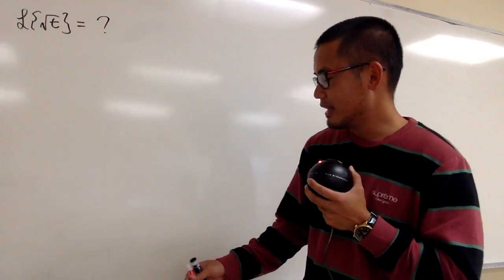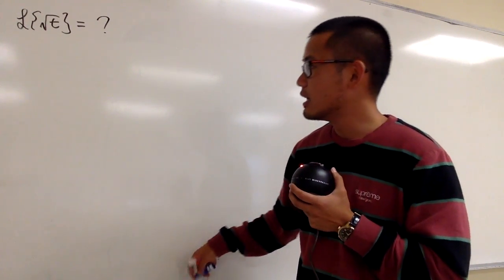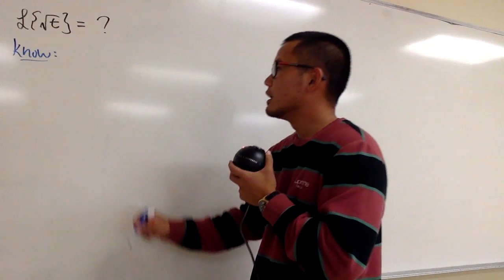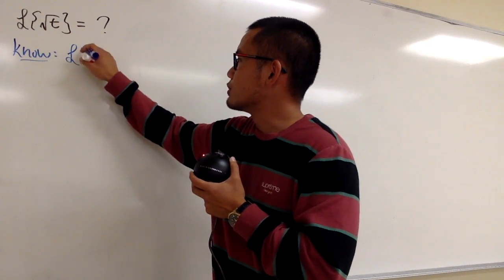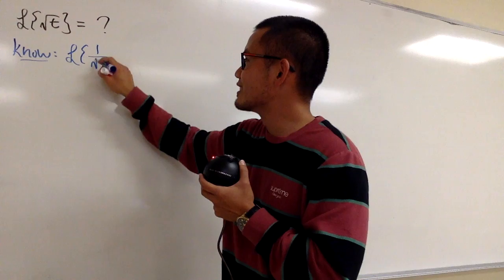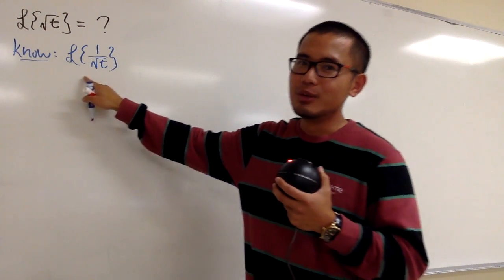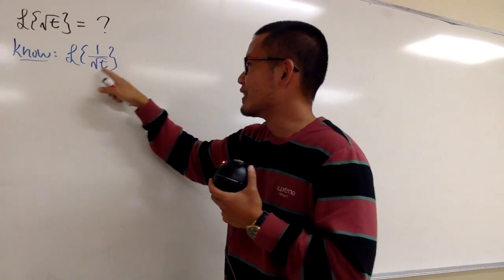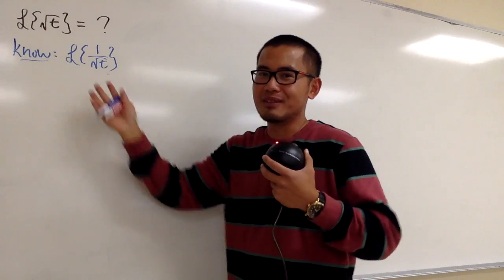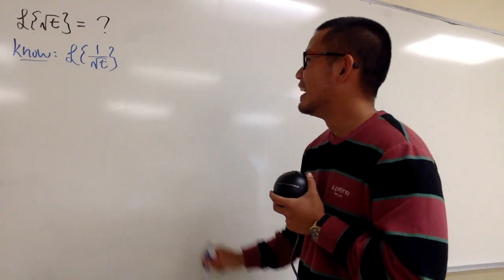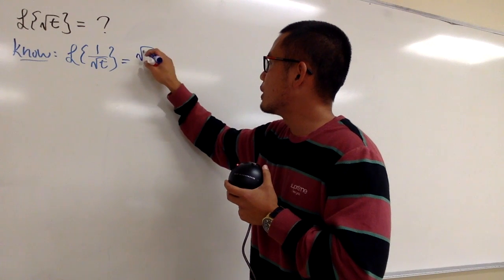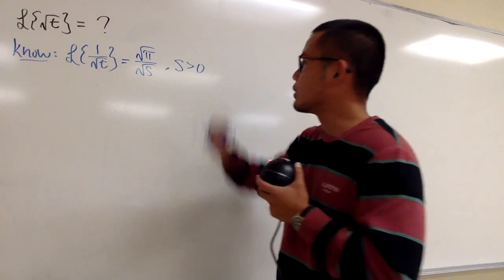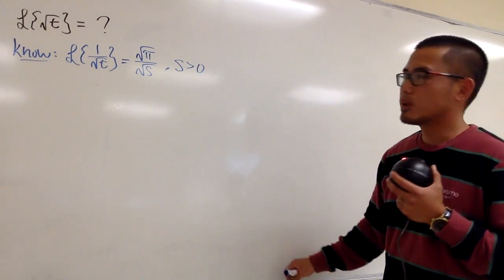And yes, we have. And let me write this down right here for you guys. This is the one that we know, all right? We have the Laplace transform of the function 1 over square root of t. And the reason I bring this up is because both of them have square root of t. And even though this right here is in the denominator for the square root of t, but close enough at the moment. This is the best that we can use at the moment. Anyway, the result of this is equal to square root of pi over square root of s, under the condition that s has to be greater than 0.